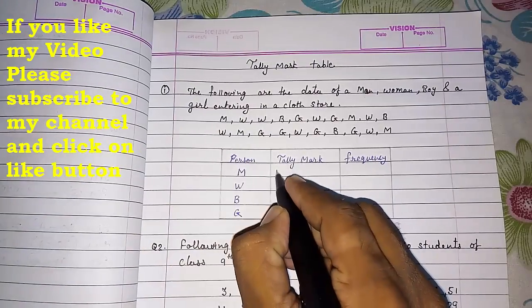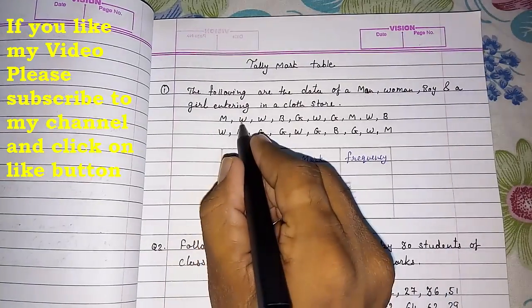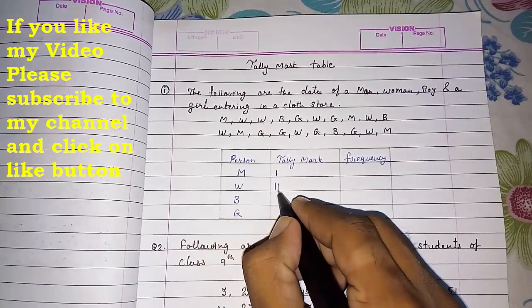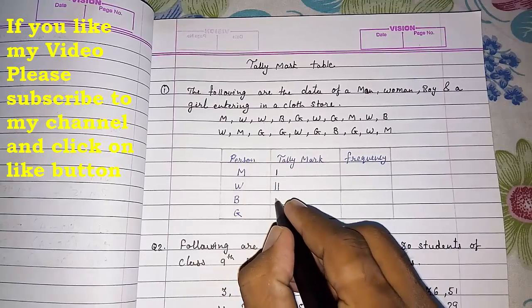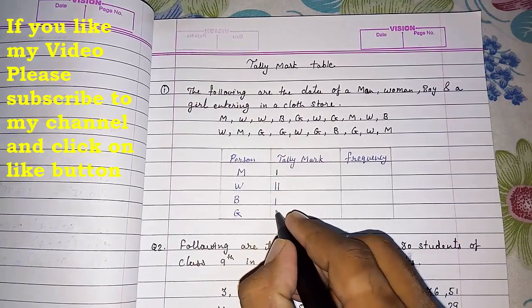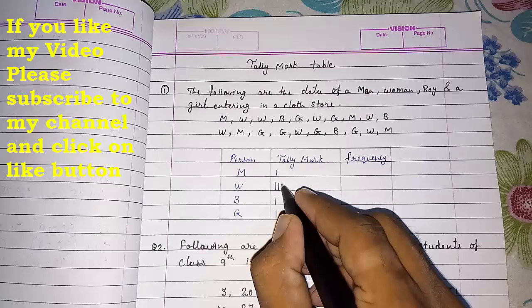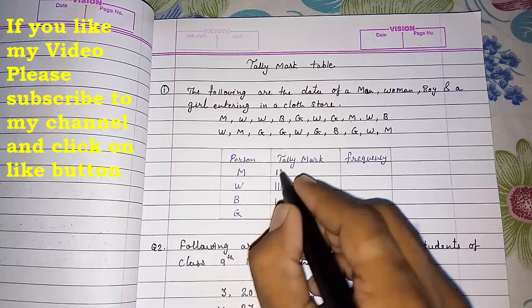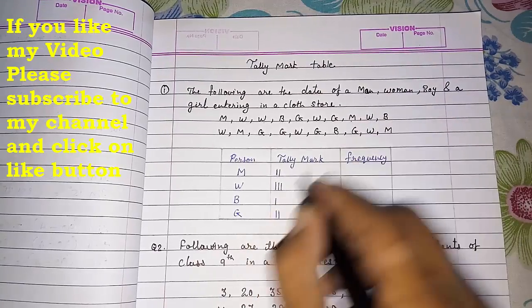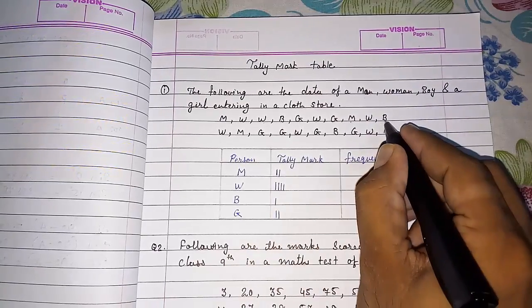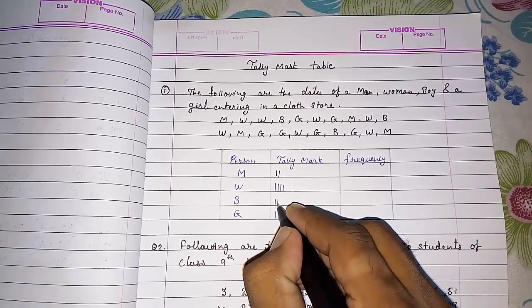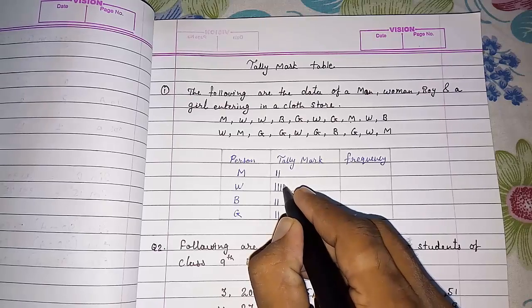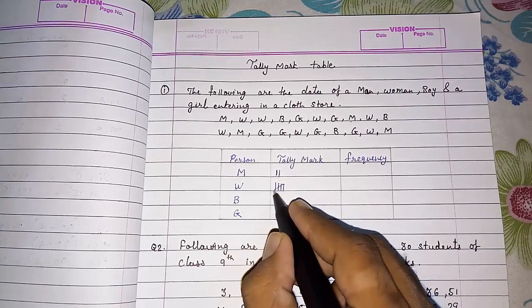First is man, so we will do a line in man. Then a woman, then again woman. One more line. Boy. Girl. Woman. Girl gets a second line. Then man. Then woman, fourth line. Then boy, one more. Now woman. Whenever after four dash, we have to cut it on the fifth dash.